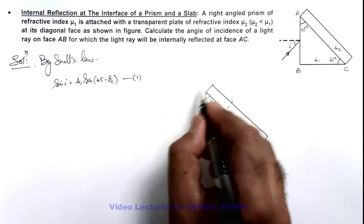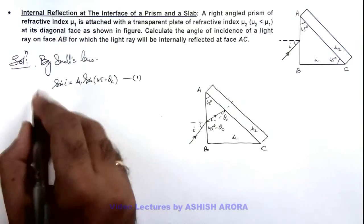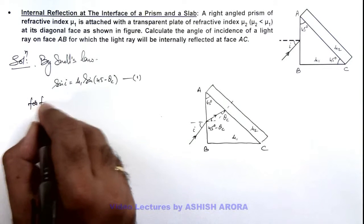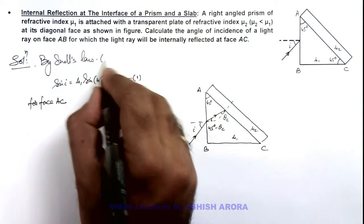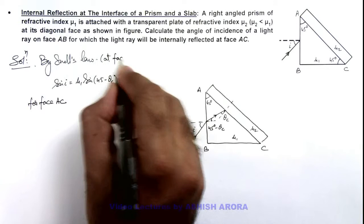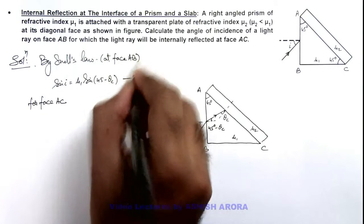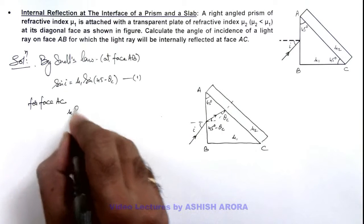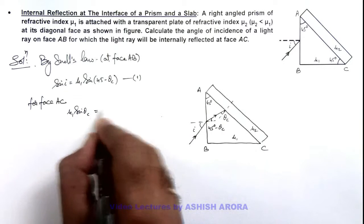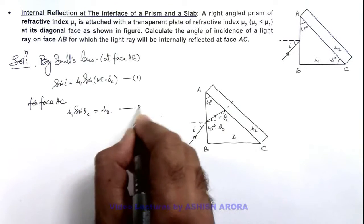And for face AC, we can write—for face AC, here we are using Snell's law. Now at face AC we can write: μ₁ sin θc equals μ₂. That is our equation 2.